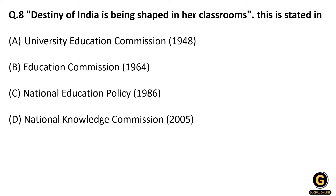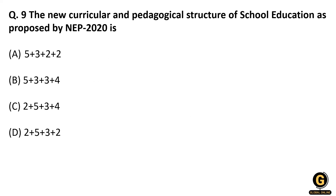'The destiny of India is being shaped in her classrooms' — in which commission was this stated? You have to study the education commissions carefully, note down all important points, and there will definitely be at least one question based on commissions. This statement was mentioned in the Education Commission of 1964, also called the Kothari Commission, which focused on the radical restructuring of education and inclusion.